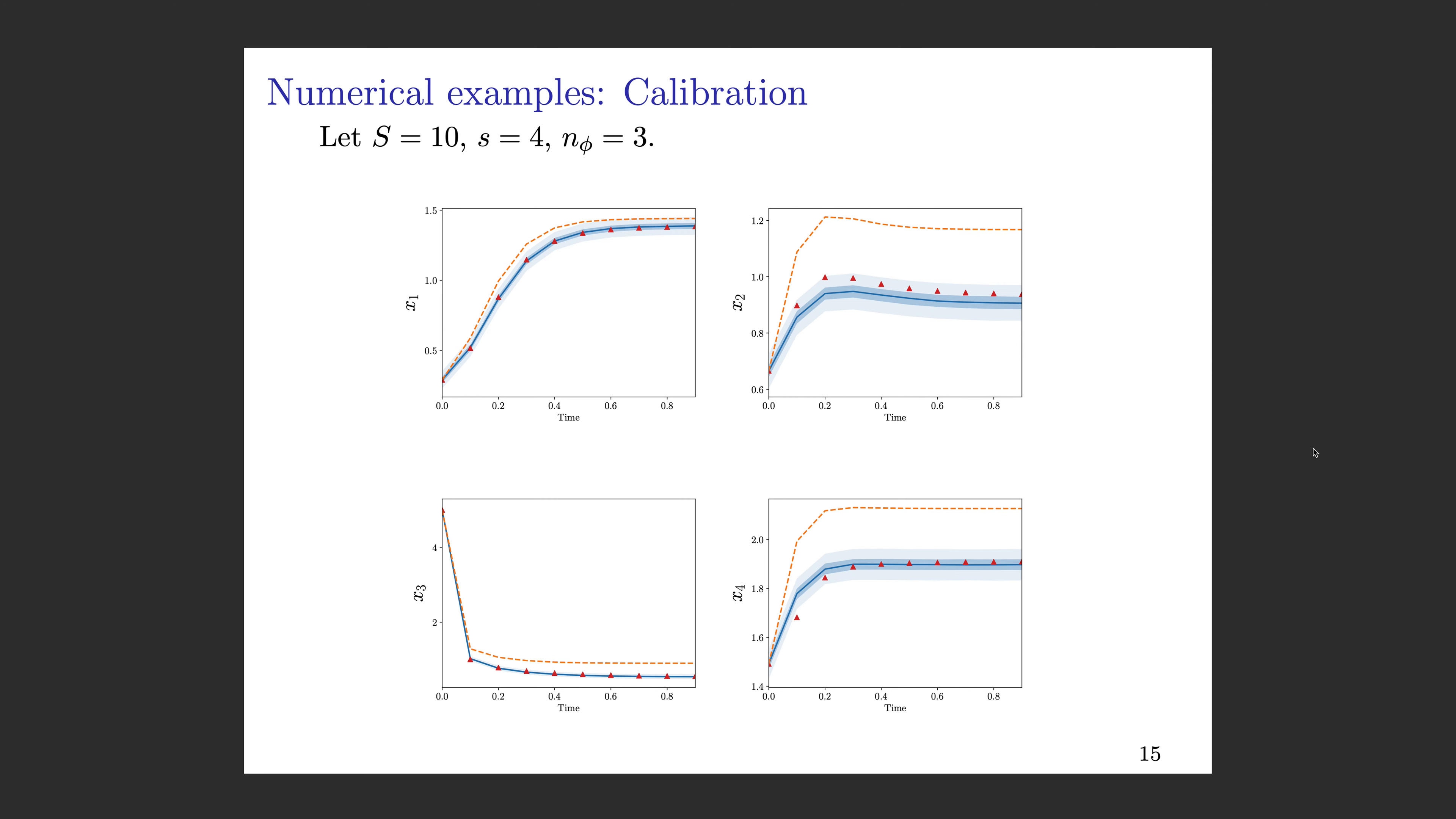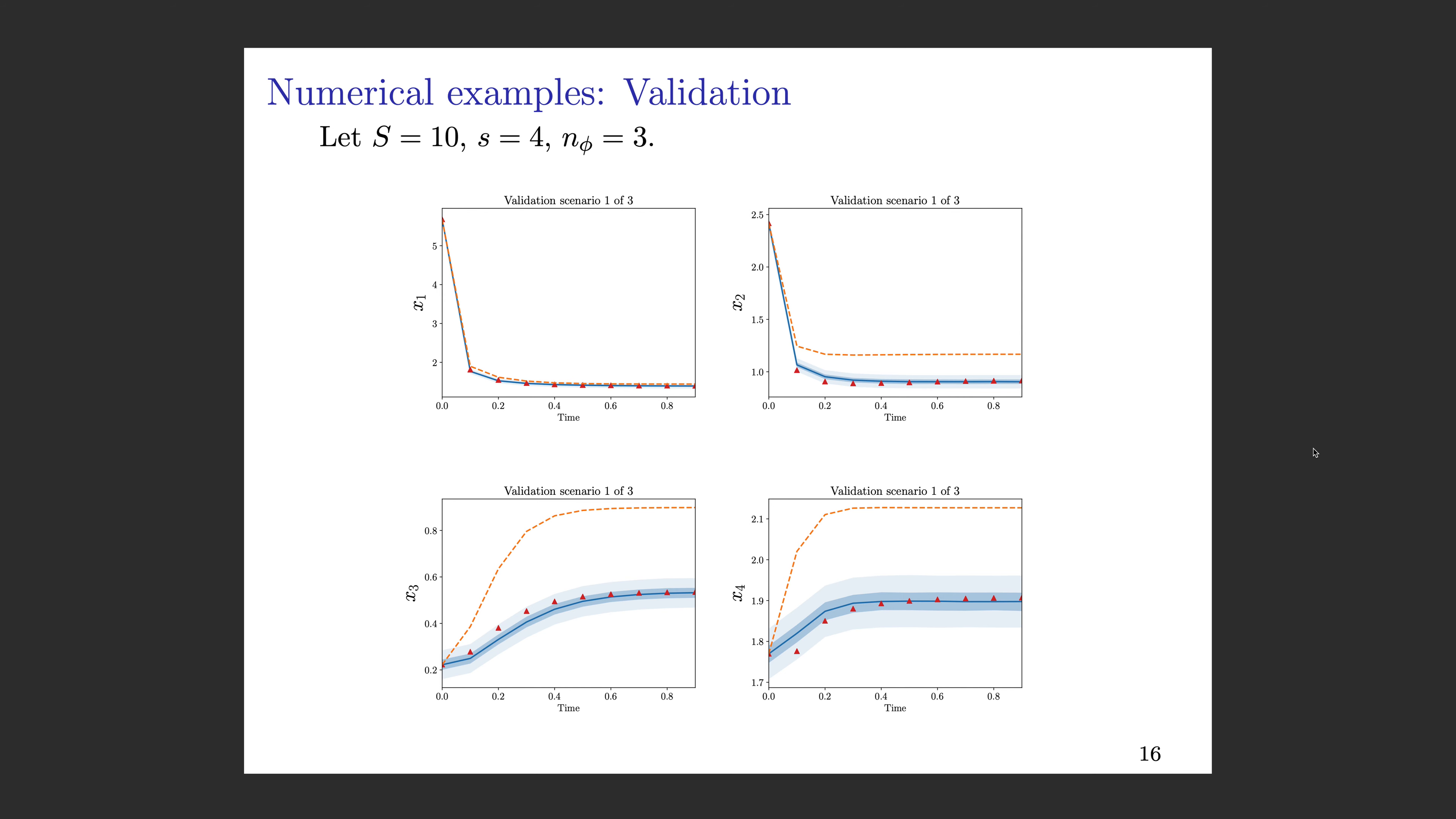Now we can ask, what about how well do these enriched models work for scenarios that the models haven't seen yet, in the sense that for scenarios for which they have not been calibrated? This plot is showing that—an example of some validation scenarios. Again, starting with S equals 10, this is the same example, little s equals four. It's been calibrated on three other scenarios. You can see that this model has not seen these initial conditions before, and it's still doing quite a good job in recovering the correct dynamics.